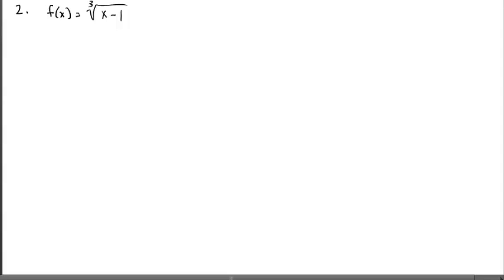Alright, example two. Notice we went from a polynomial function to a radical function, and our third example is going to be a rational function — so polynomial, radical, and rational. Notice that the root is an odd number, so I don't have to worry about a limitation on any x. I can have a cube root of a negative number — it's the even roots you have to be careful about, as they produce imaginary numbers. Let's figure out what this graph is going up, going down, and if it has any mins or maxes — all through the first derivative test.